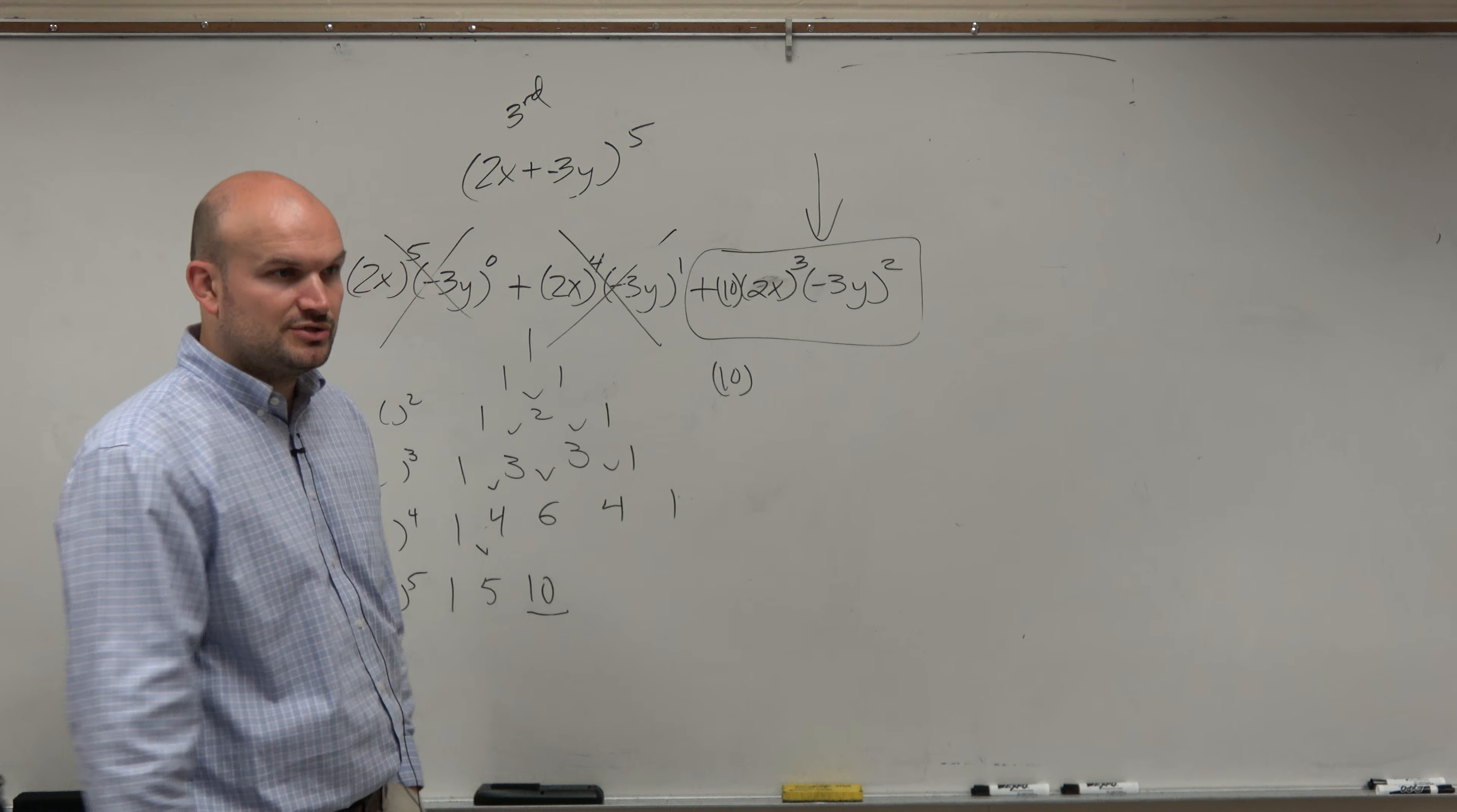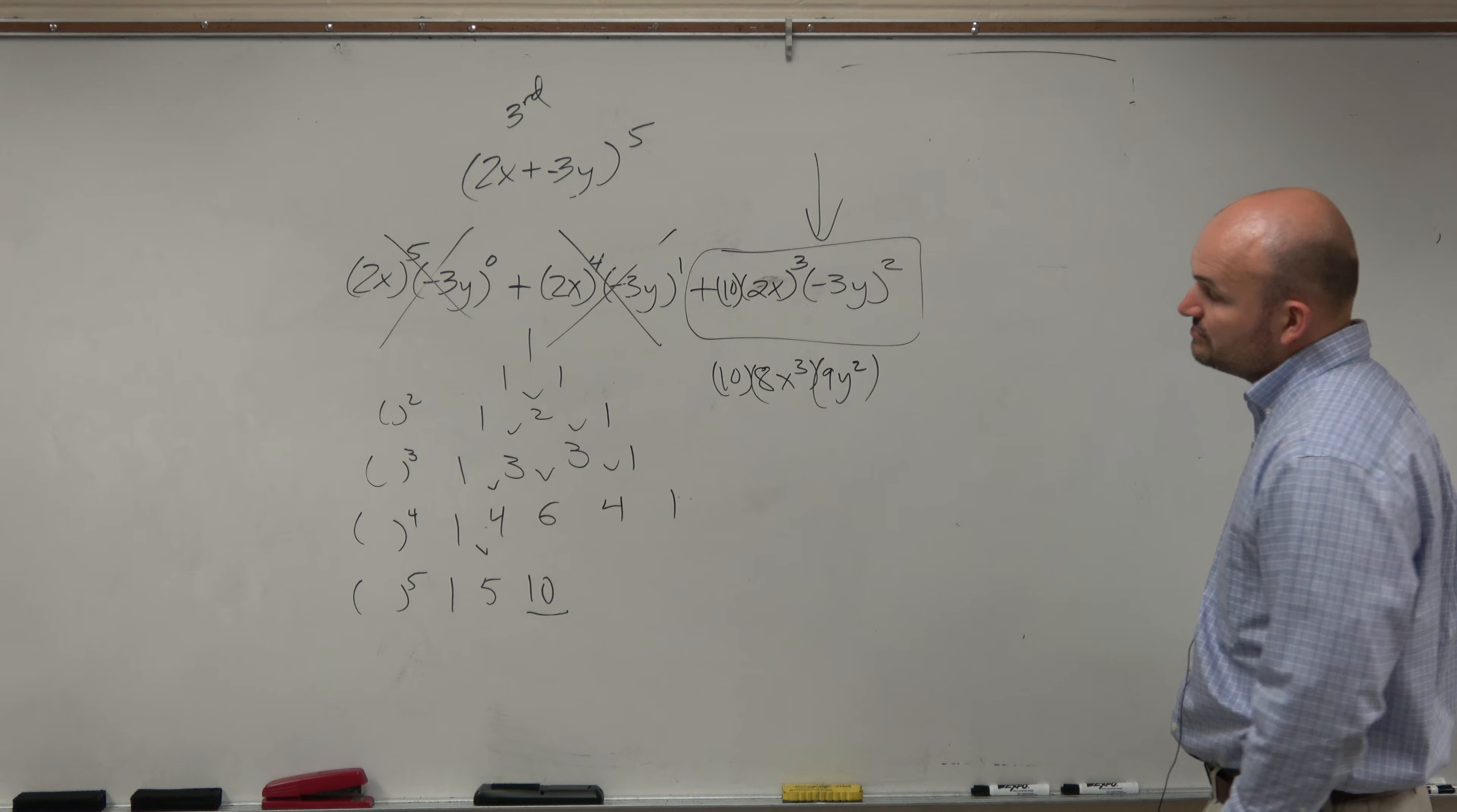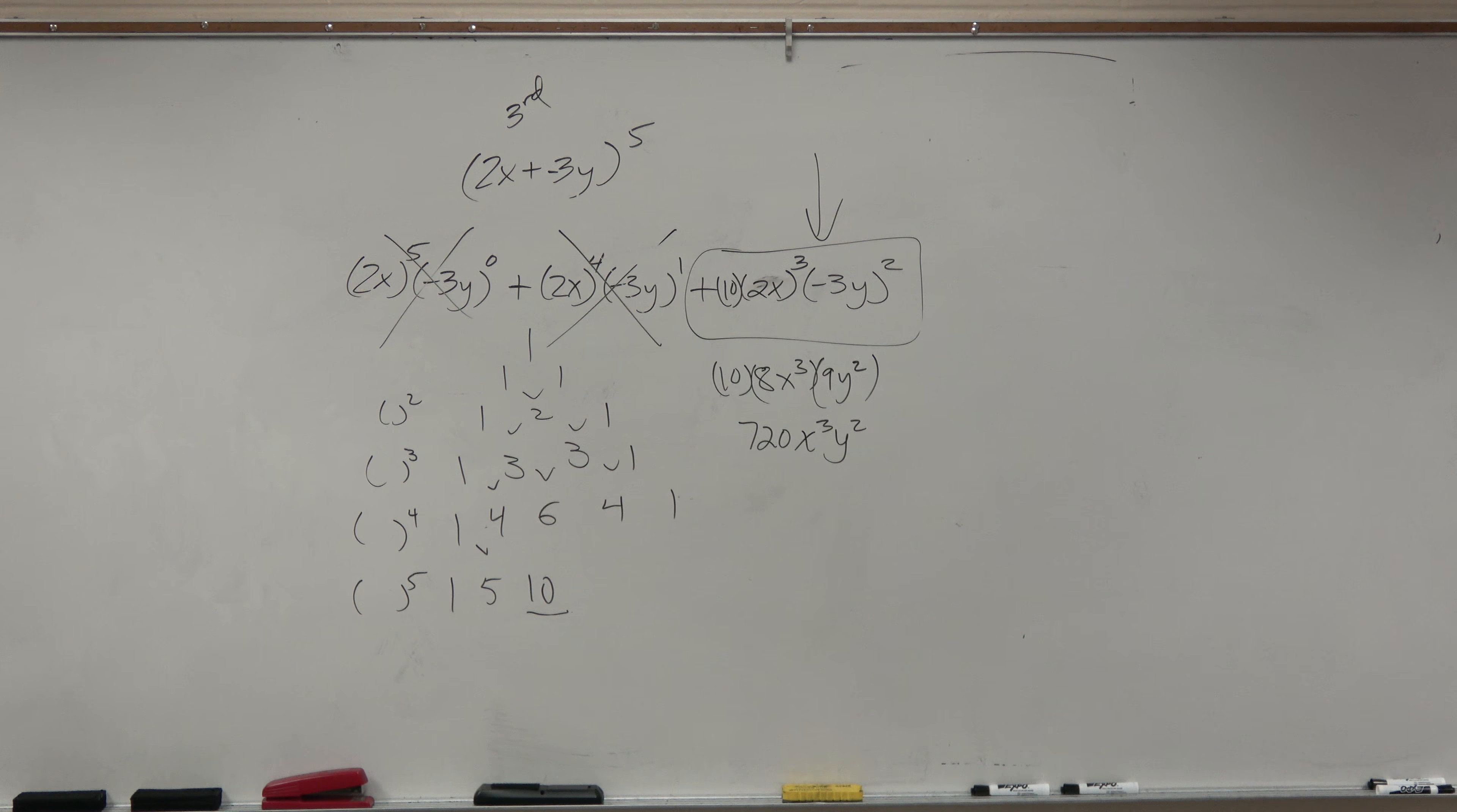So let's simplify 2x cubed. 2x cubed is 2x times 2x times 2x, which would be 8x cubed. Negative 3y squared is negative 3y times negative 3y, which is going to be a positive 9y squared. And then I can just multiply 8 times 9, which is 72, times 10, which would be 720x cubed y squared.